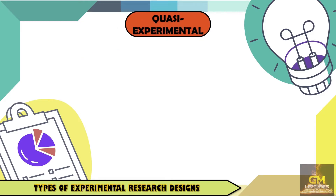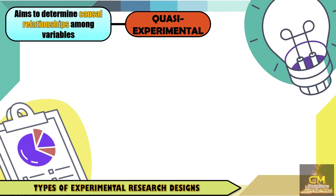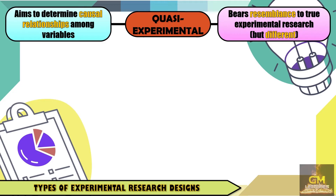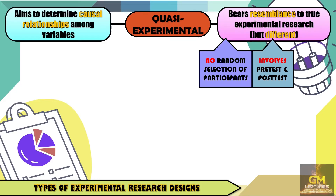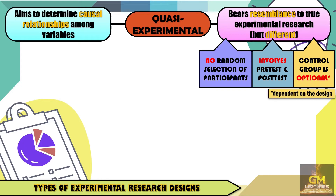Now at this point, we're going to talk about the quasi-experimental research. The quasi-experimental research aims to determine causal relationships among variables. Also, it bears resemblance to the true experimental research design; however, it's a bit different. It's different because there is no random selection of participants in quasi-experimental research. Also, it involves pre-test and post-test. Furthermore, in quasi-experimental research, the control group is optional, meaning it's very much dependent on the design or type of quasi-experimental research conducted.